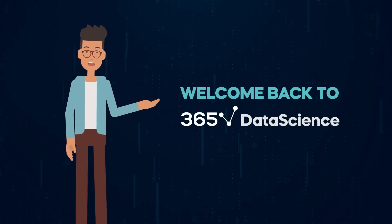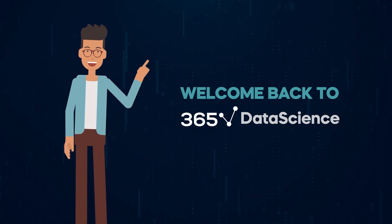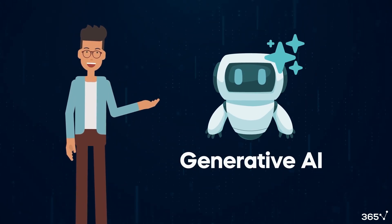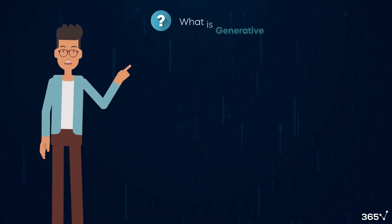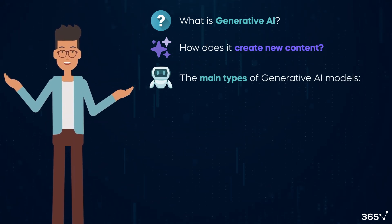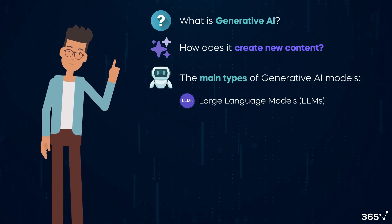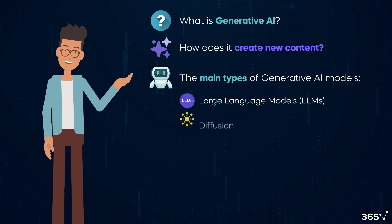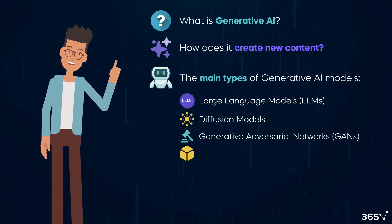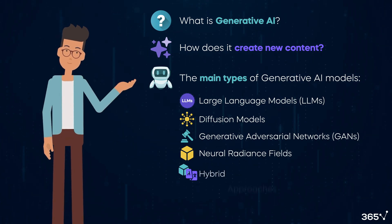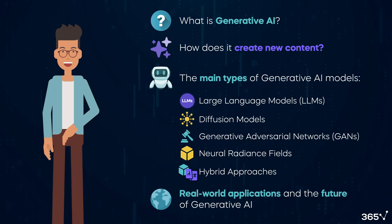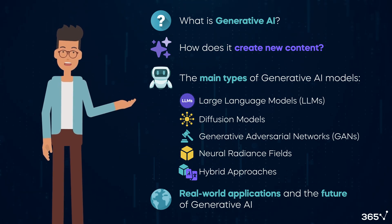Hi there and welcome back to 365 Data Science. In today's video we'll explore the AI branch Generative AI. We'll cover what Generative AI is, how it creates new content, the main types of Generative AI models including large language models, diffusion models, generative adversarial networks, neural radiance fields, and hybrid approaches. Then we'll look at real-world applications and the future of Generative AI. Let's dive in!